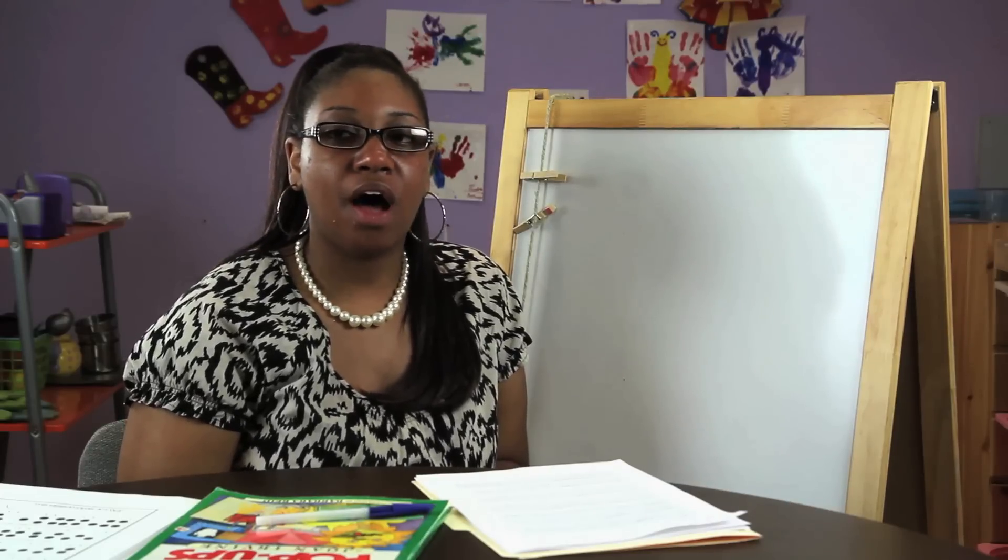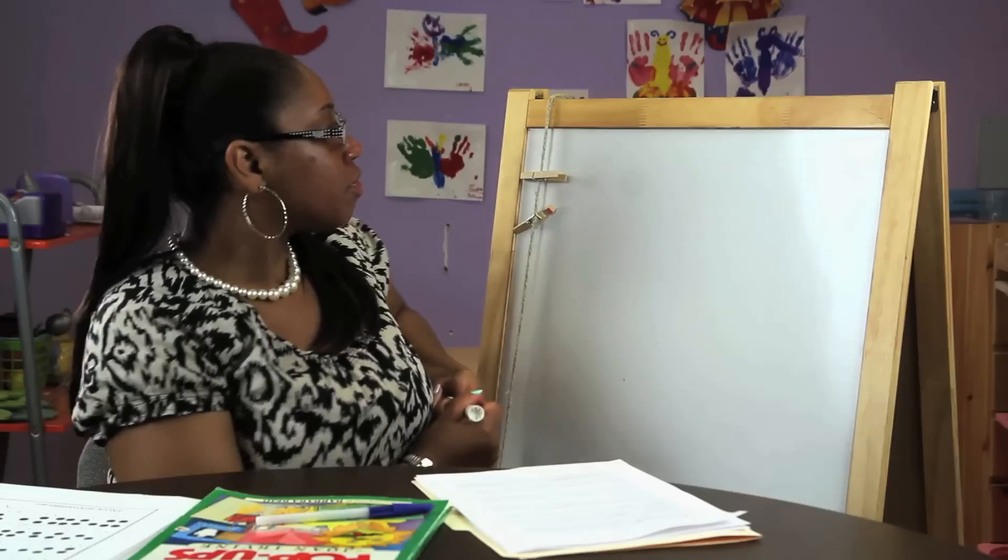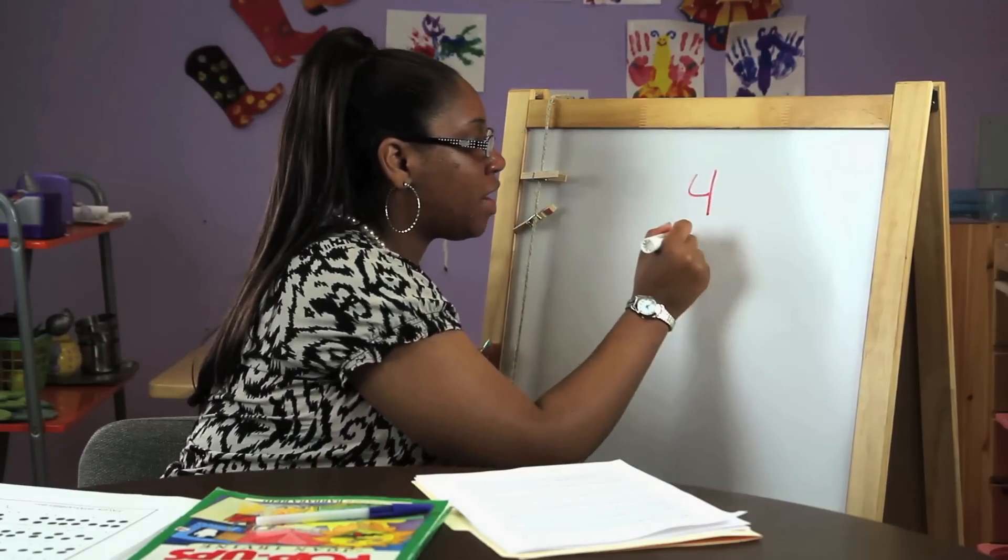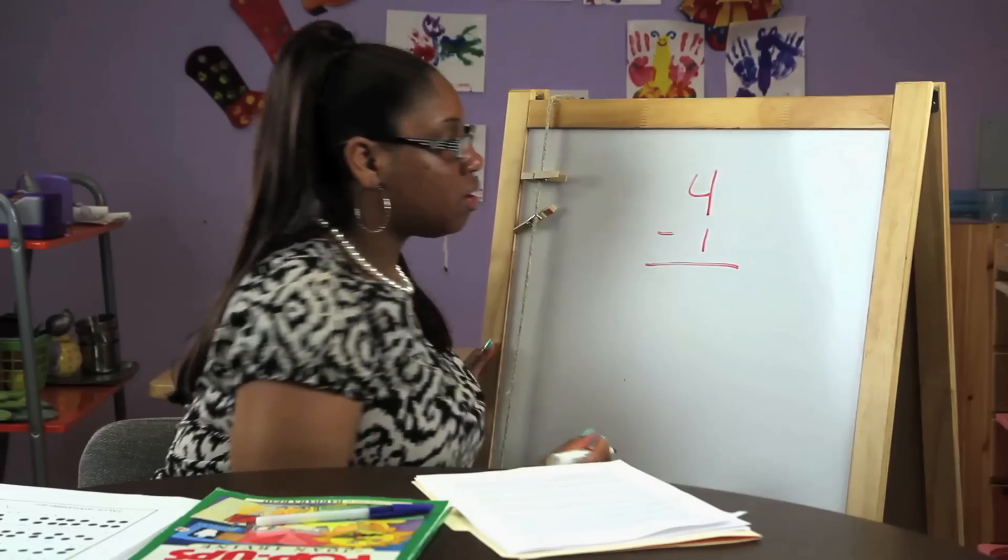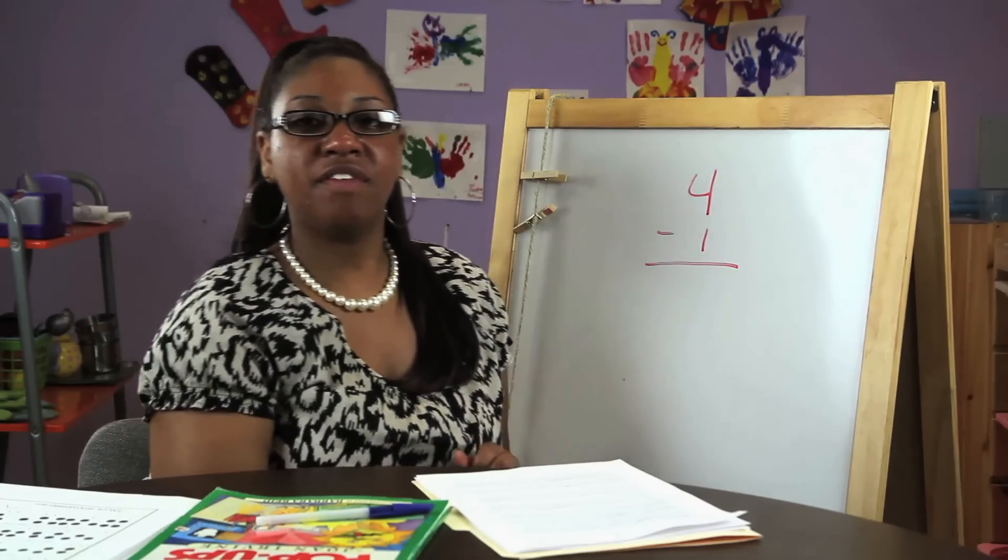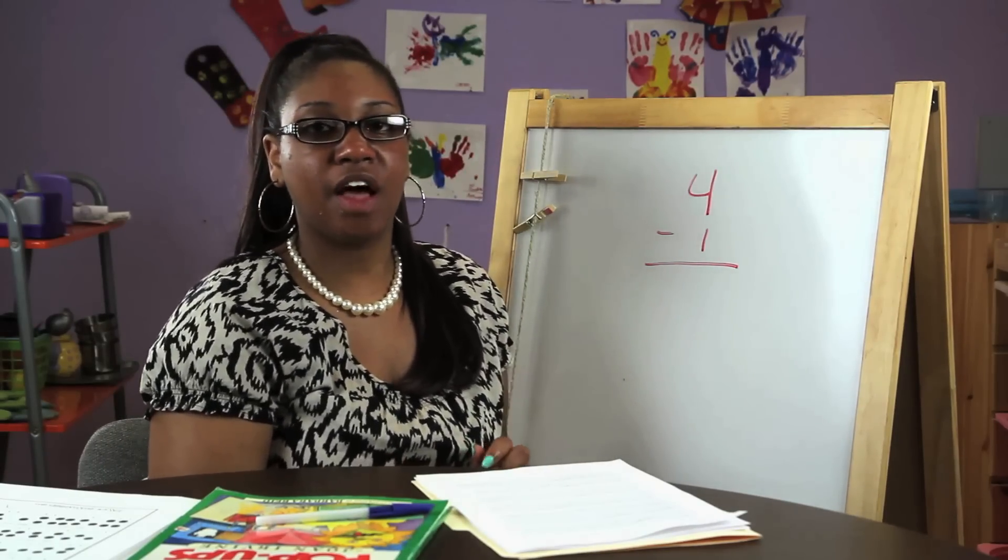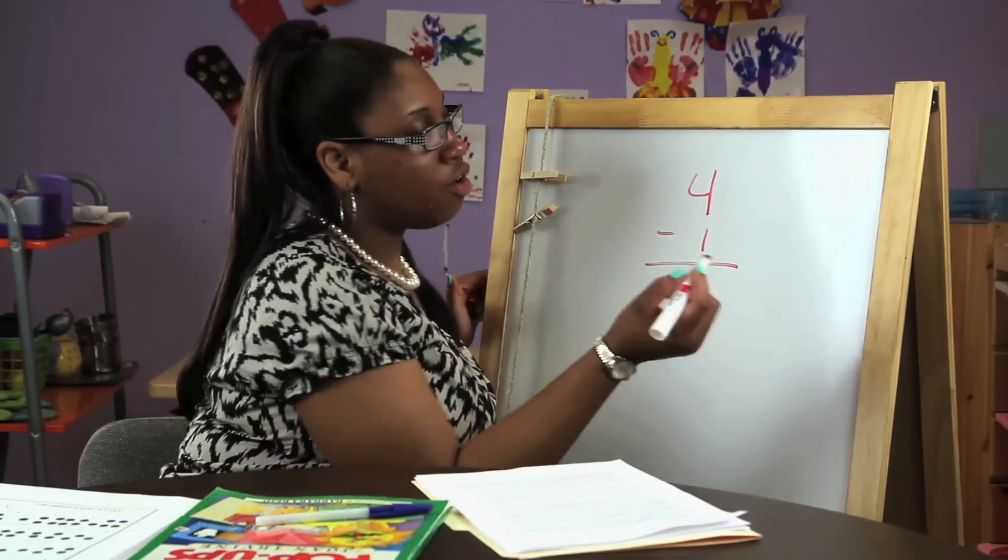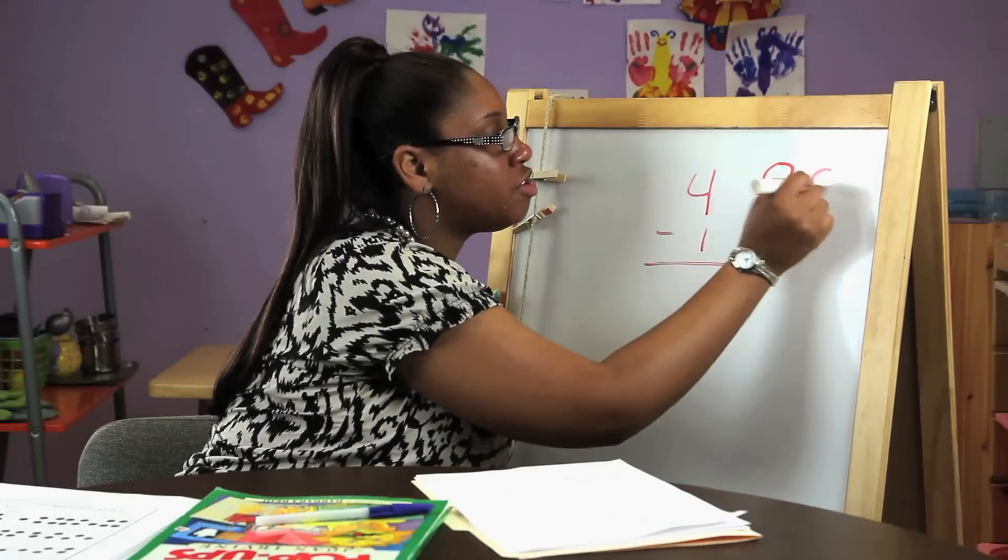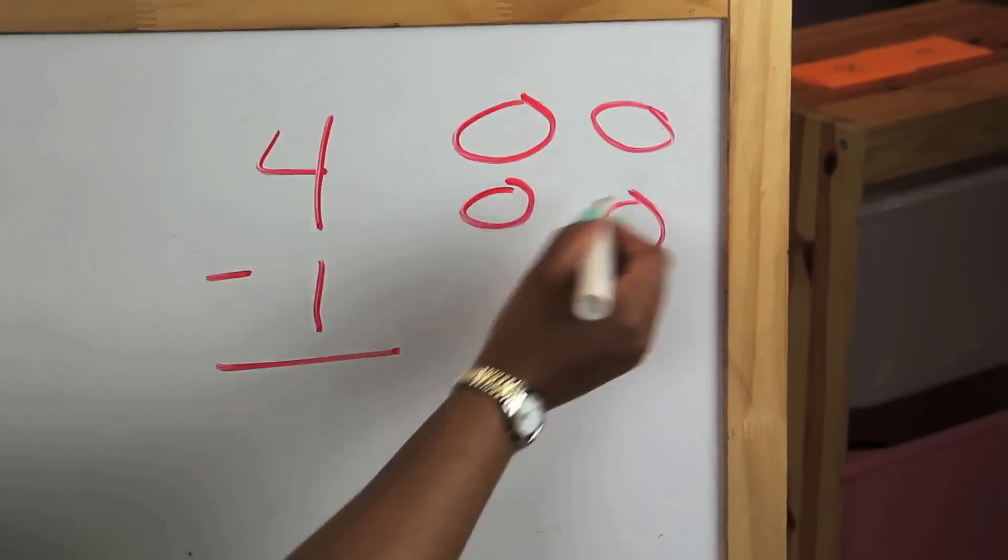So I will put on the board four minus one. Always have different visuals to help the students see. So put four circles up, one, two, three, four.